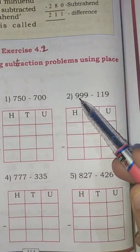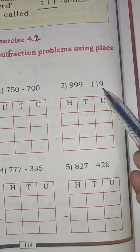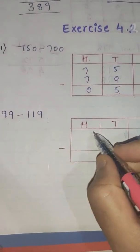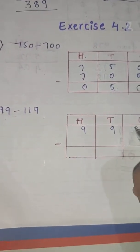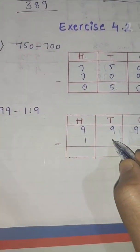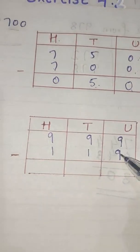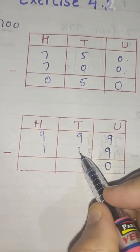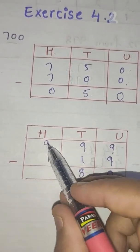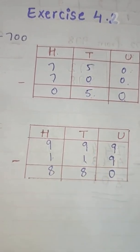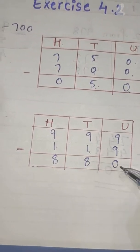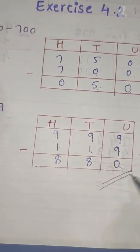Now let us take another example: 999 minus 119. So 9 minus 9 is 0. 9 minus 1 is 8. And 9 minus 1 is 8. So the difference is 880.